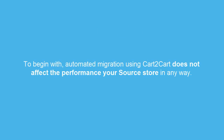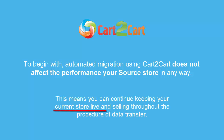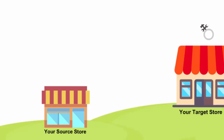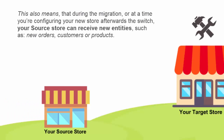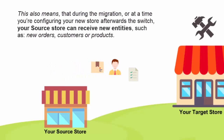To begin with, automated migration using Cart2Cart does not affect the performance of your source store in any way. This means you can continue keeping your current store live and selling throughout the procedure of data transfer. This also means that during the migration, or at the time you're configuring your new store after the switch, your source store can receive new entities, such as new orders, customers, or products.